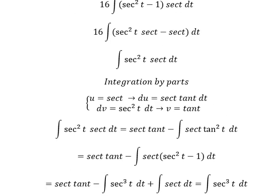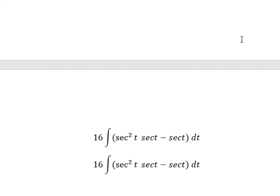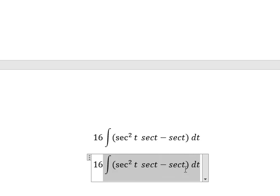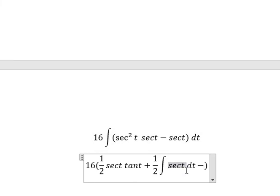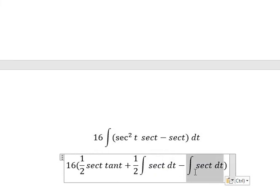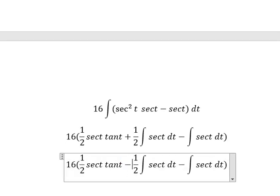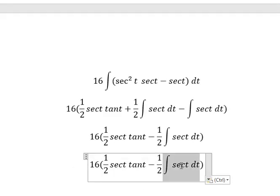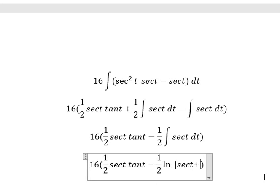Now we need to go back and substitute. The integral result expressed in terms of t includes this expression, and then minus the integral of sec(t). So we have (1/2) minus (1/2), giving negative 1/2, times the integral. We have ln of the absolute value of sec(t) plus tan(t).